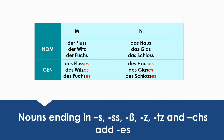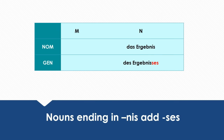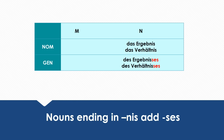Continuing with S-ending nouns: 'das Glas' becomes 'des Glases,' 'der Fuchs' becomes 'des Fuchses,' and 'das Schloss' becomes 'des Schlosses.' Nouns ending in NIS add SES at the end: 'das Ergebnis' becomes 'des Ergebnisses,' and 'das Verhältnis' becomes 'des Verhältnisses.'